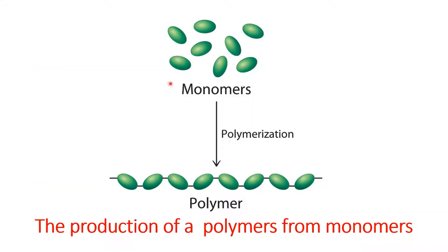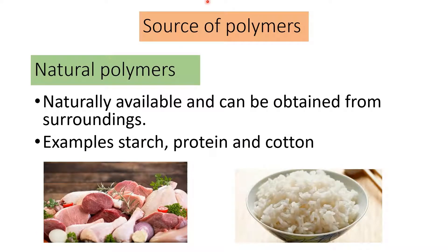Here we have a monomer, a single unit. Through polymerization, a polymer will be produced. Monomers go through the polymerization process and we will get polymer. We have two types of sources of polymers.